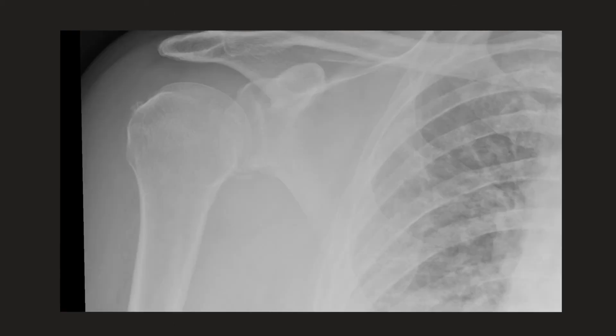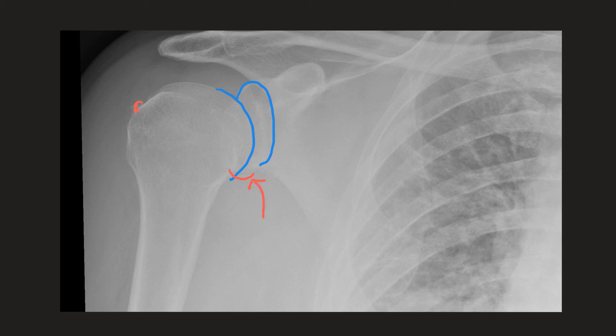Looking at this x-ray there's no current dislocation, as the humeral head is nicely congruent with the glenoid. However, looking more closely, you can see a bony fragment inferior to the glenoid — a bony Bankart lesion — and a bony fragment in the posterolateral humeral head, in keeping with a Hill-Sachs lesion. This patient must have had a previous anterior dislocation which caused these injuries.